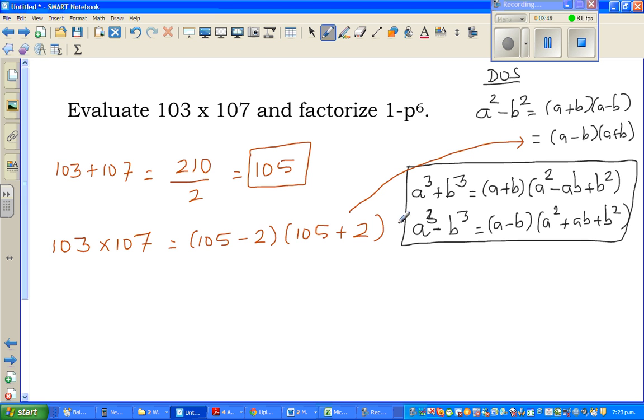I want you to compare this with this form. You can compare your a with 105 and your b with 2. So you can use this formula, which is 105 squared minus 2 squared.